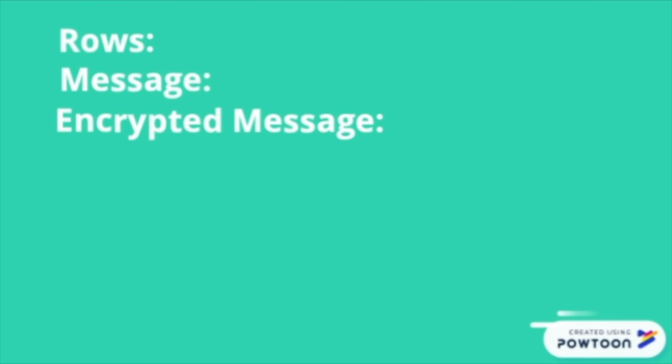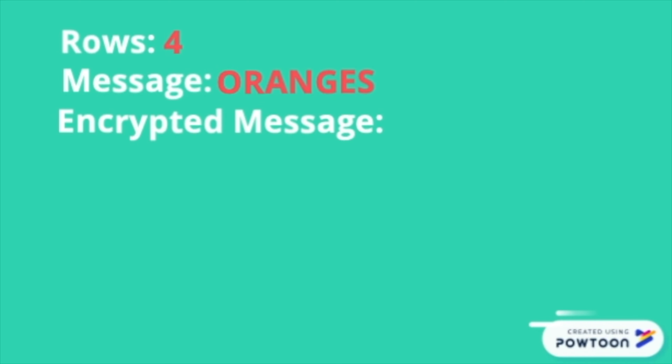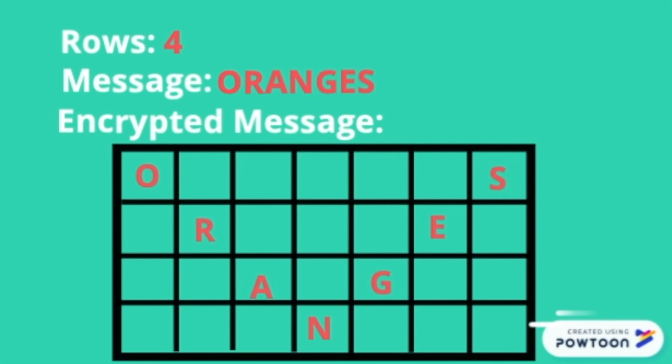Now pause the video and try to encode 'oranges' using four rows. Did you get it? This is how your table should have looked — the final message is O-S-R-E-A-G-N.